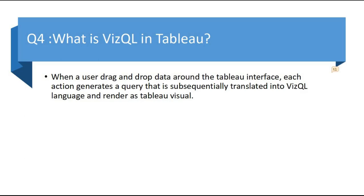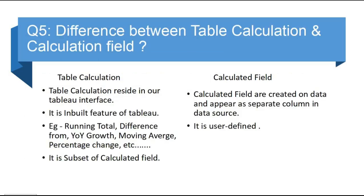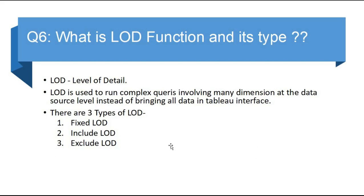The next question is: what is the difference between table calculation and calculated field? Table calculations reside in the Tableau interface — it is an inbuilt feature of Tableau. On the other hand, calculated fields are created on data and appear as a separate column in the data source. Examples of table calculations are running total, difference from, year-over-year growth, moving average, and percentage change. Table calculation is a subset of calculated field.